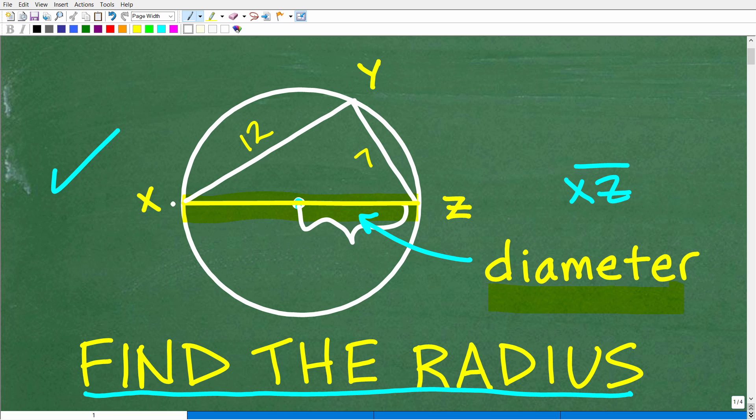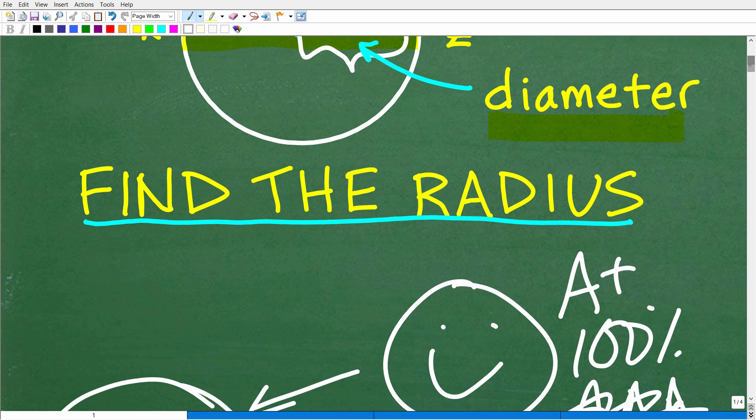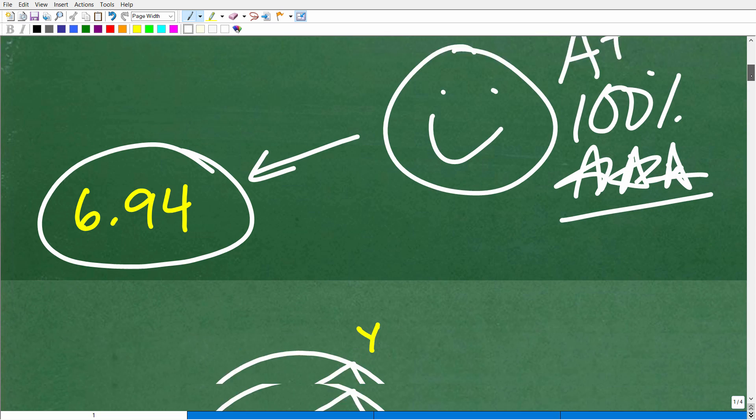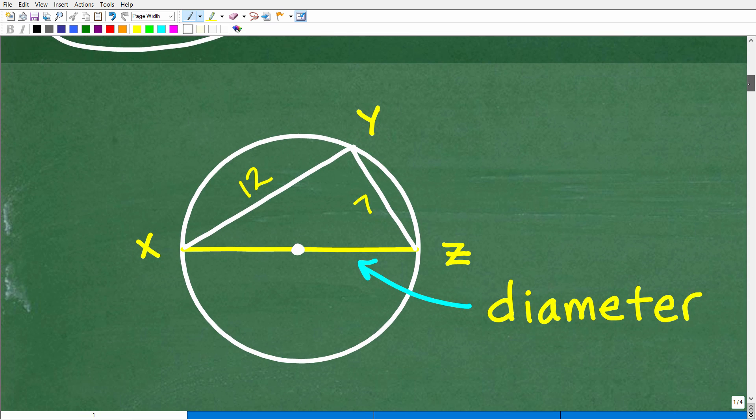This is what we call an inscribed angle within a circle. When you study circles, there's all different sorts of theorems, postulates, and properties. They're not all that difficult. It's just a lot of formulas you have to learn to work with.